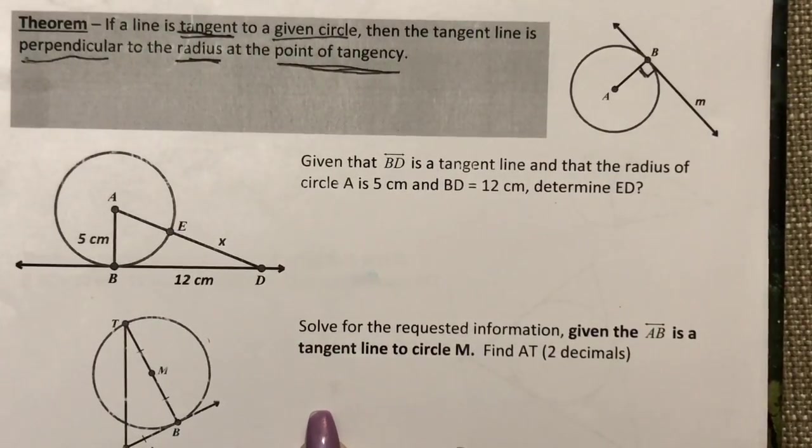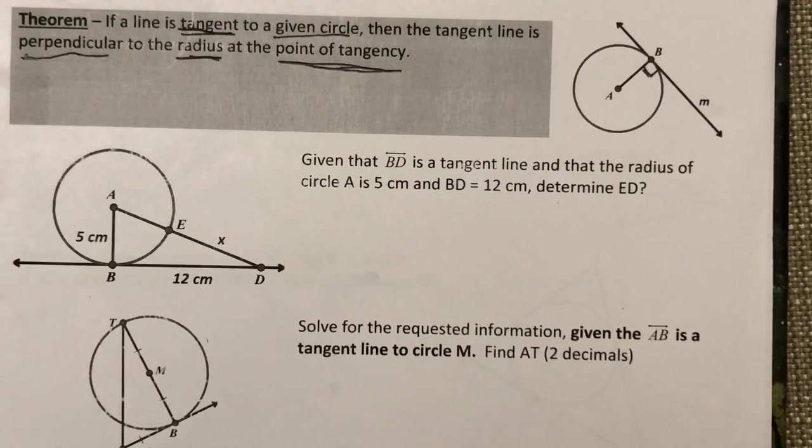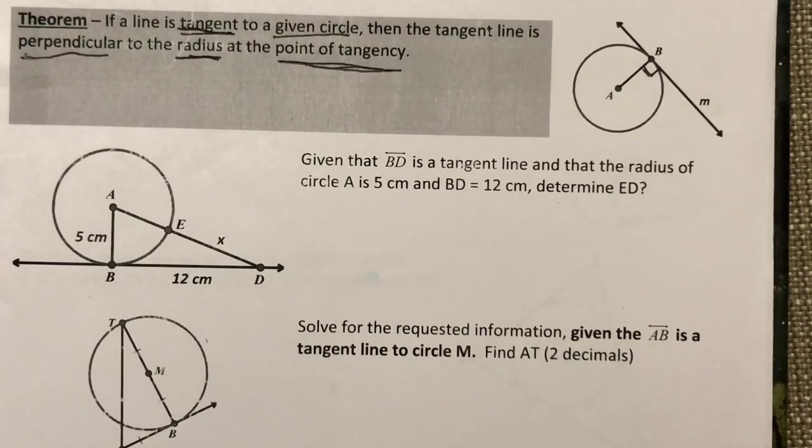Now we can use that property or theorem or rule or fact to help us solve problems like you see here below. Given that BD is a tangent line and that the radius of circle A is 5 centimeters and BD is 12, determine what ED is.